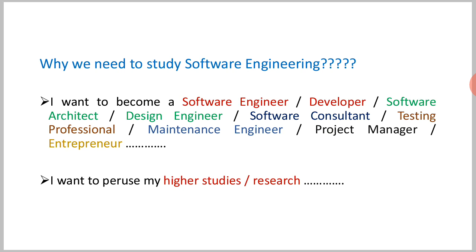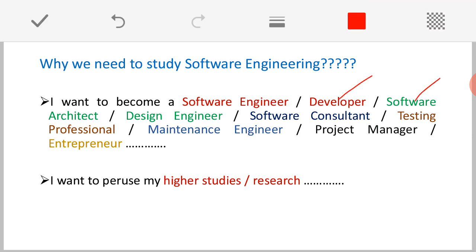Why do we need to study software engineering? As students of Computer Science and Engineering or Information Science and Engineering, you likely have a goal of becoming a good programmer or software engineer in MNCs, companies, or software industries. You may have come across a variety of positions in the software industry — for example, software engineer, developer, software architect, design engineer, software consultant, testing professionals, maintenance engineer, project manager, or even entrepreneur where you can start your own company.